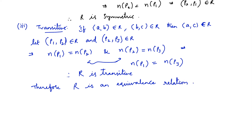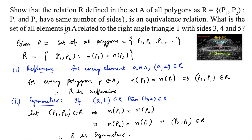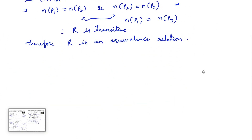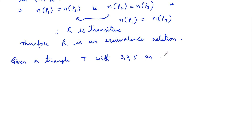Now we need to find the set of all elements in A related to the right triangle T with sides 3, 4, and 5. The triangle T with sides 3, 4, 5 has 3 sides. We need to find all elements related to T in the set A.